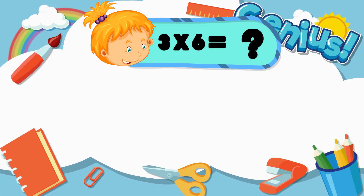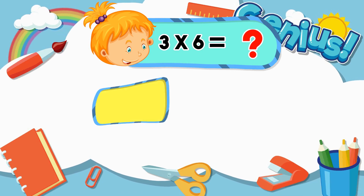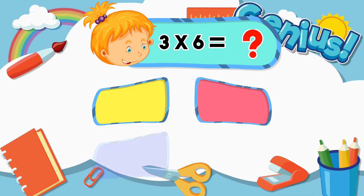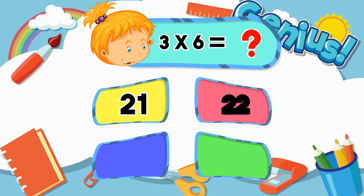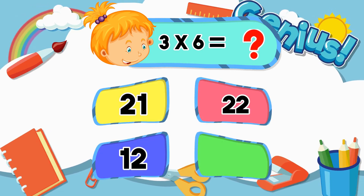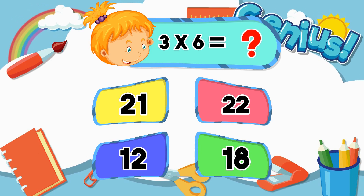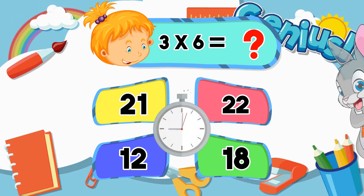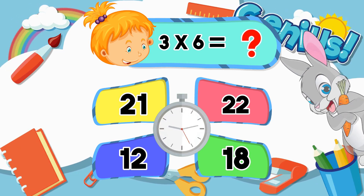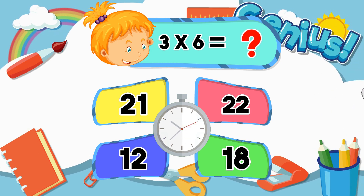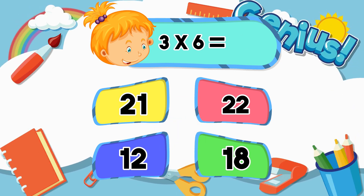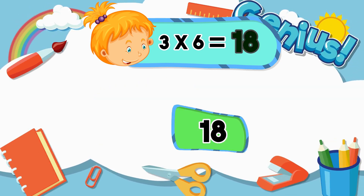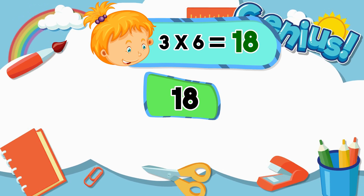What is 3 times 6? 21, 22, 12, 18. The answer is 18.